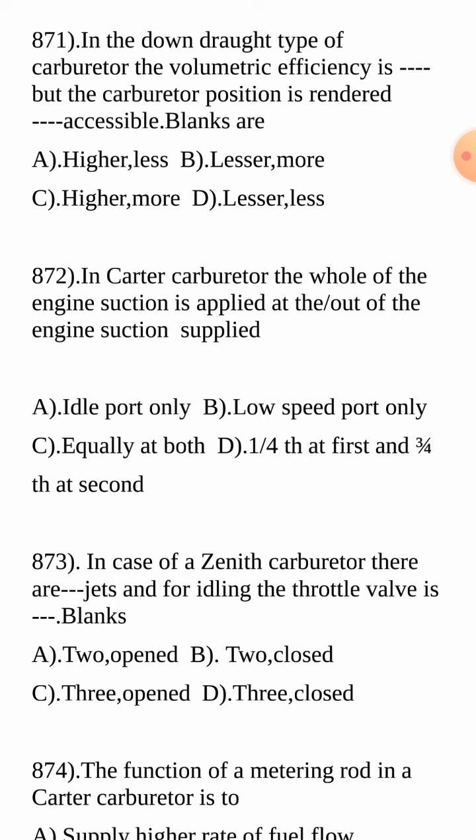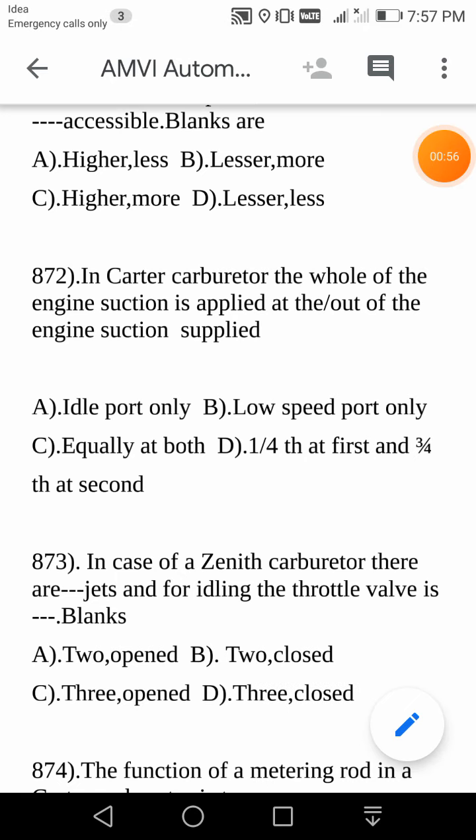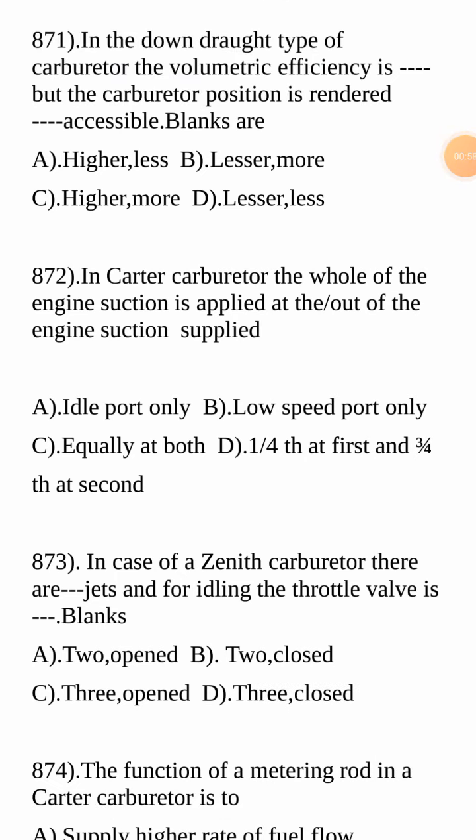First question: In the downdraft type of carburetor, the volumetric efficiency is dash, but the carburetor position is rendered dash accessible. The answer is the combination 'higher' and 'more' — that is, the volumetric efficiency is higher, and the carburetor position is rendered more accessible.